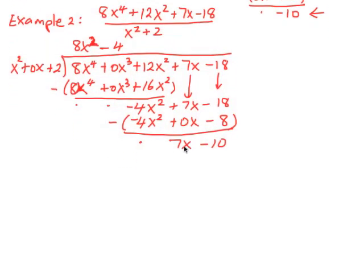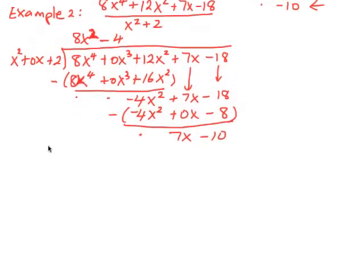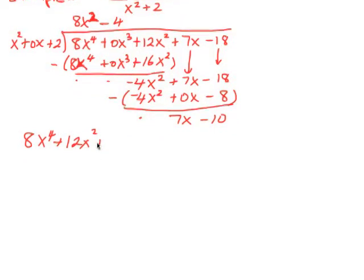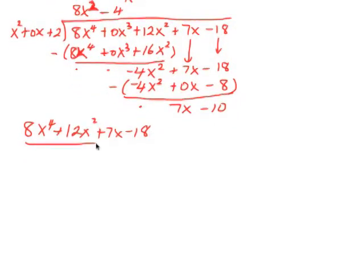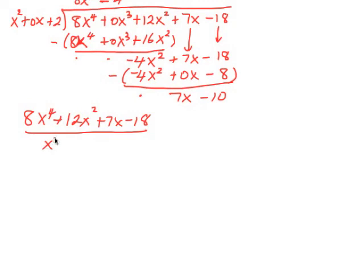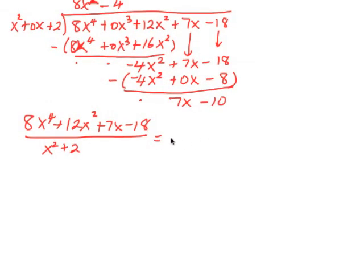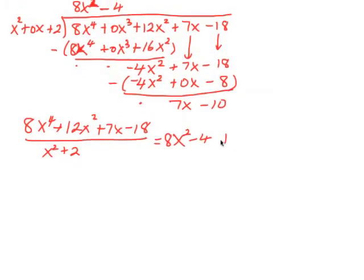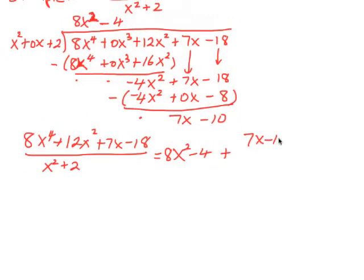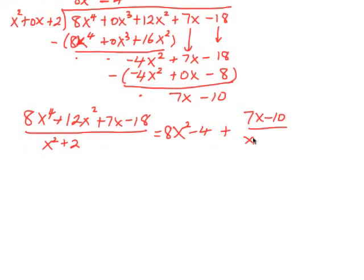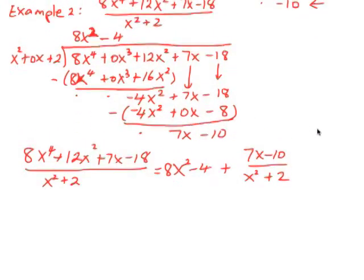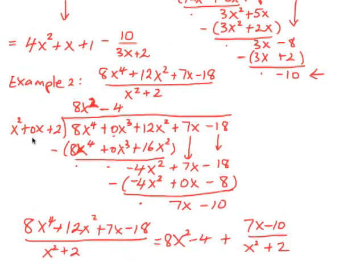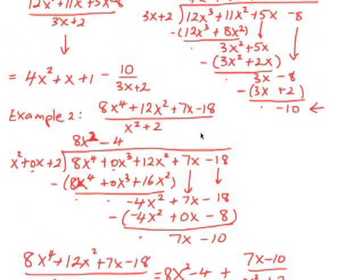Now, we can't multiply x squared by anything to get 7x. So this will be our result. So our 8x to the 4 plus 12x squared plus 7x subtract 18 divided by x squared plus 2 is going to be 8x squared minus 4 plus a remainder of 7x minus 10 over x squared plus 2. And that will be our result. So very importantly here, don't forget to put in the place values if you don't have an exponent of x in the problem.